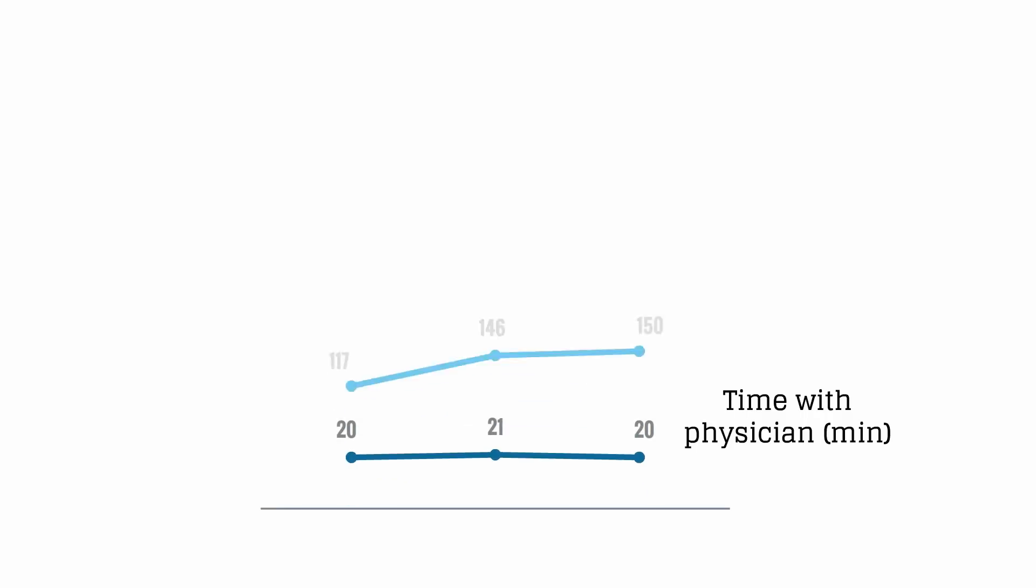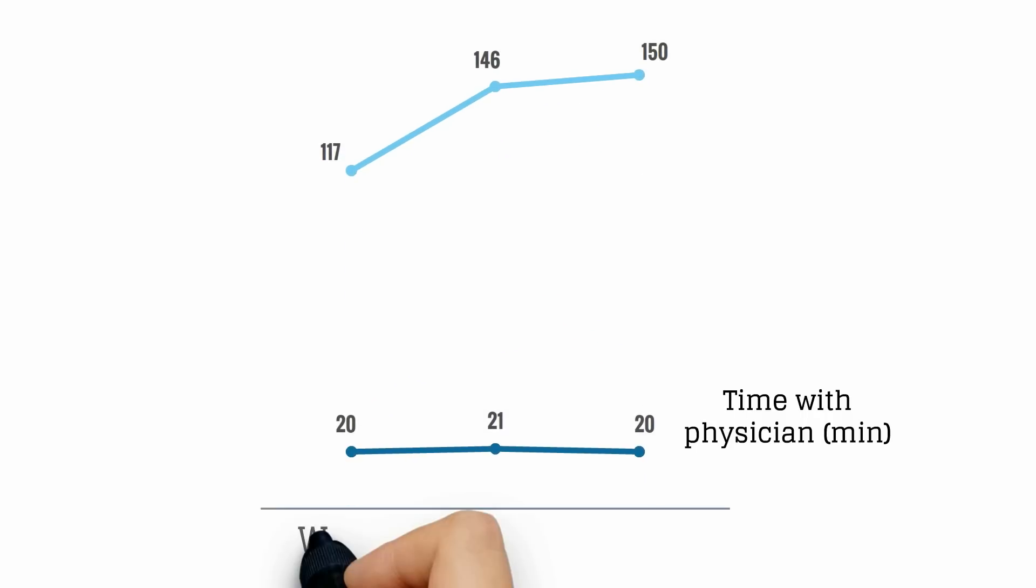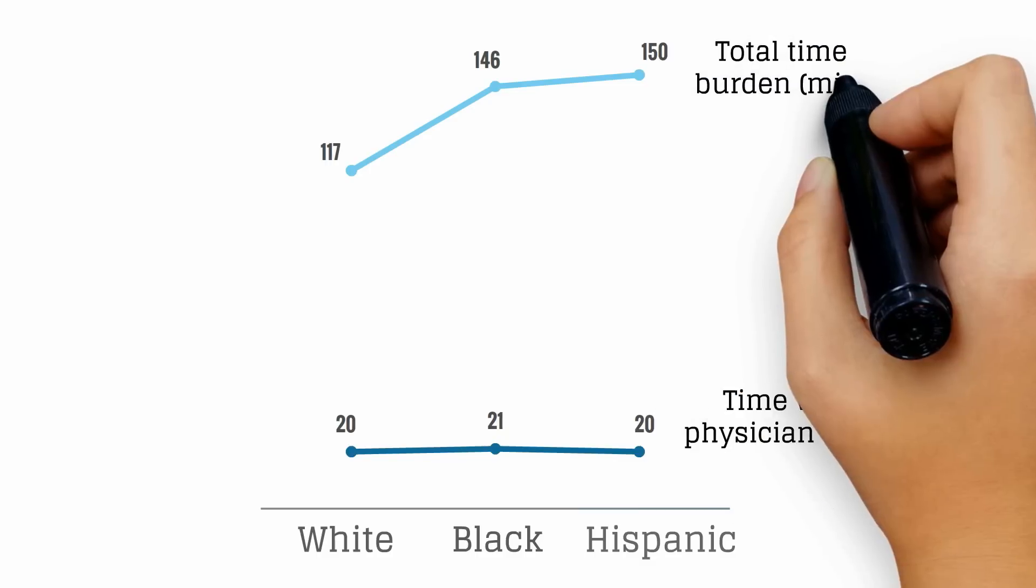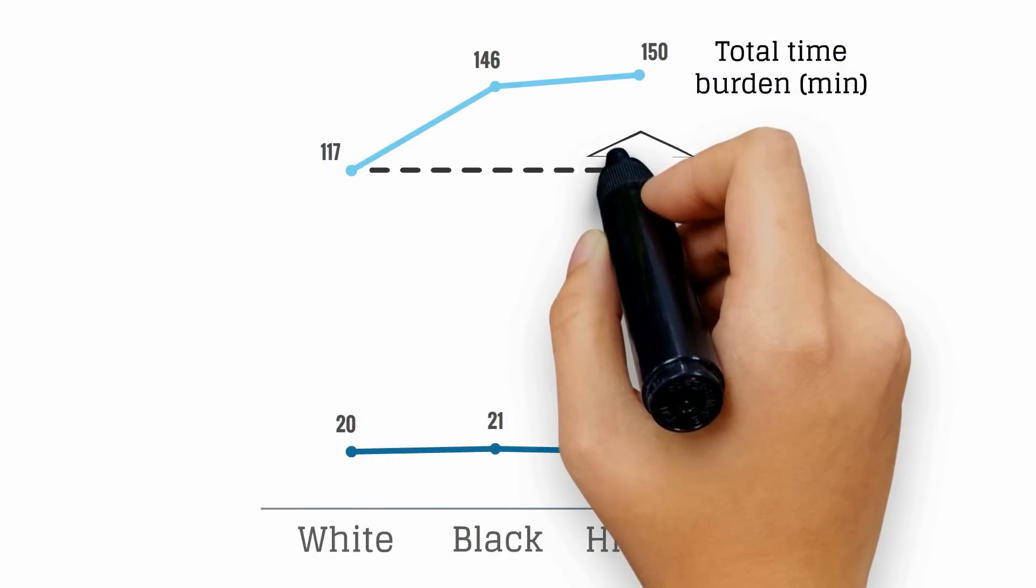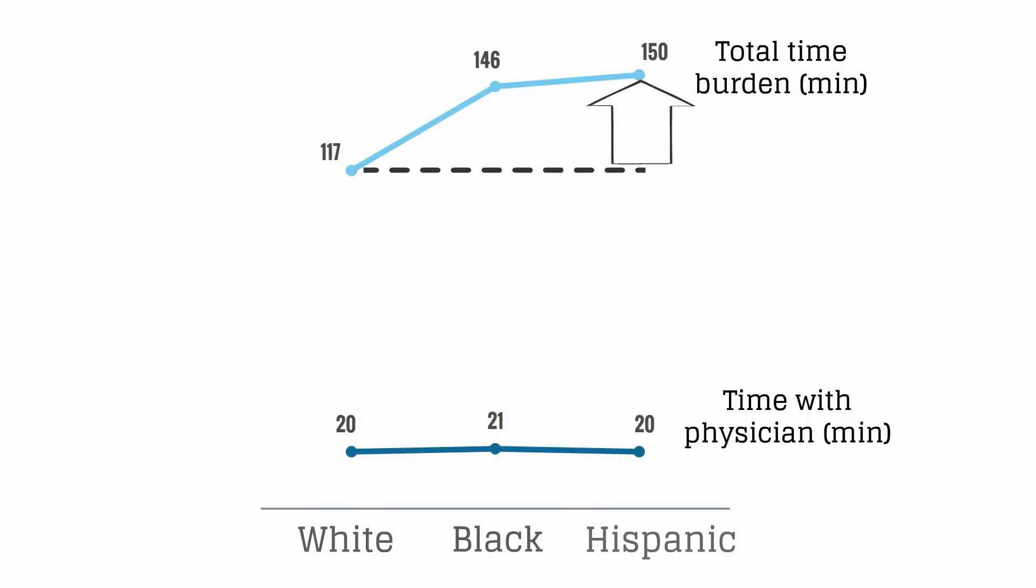In our second study, we found that patients' time with their physician was similar across racial, ethnic, and socioeconomic groups, but that the total time burden was about 25% longer for racial and ethnic minorities and for the unemployed.